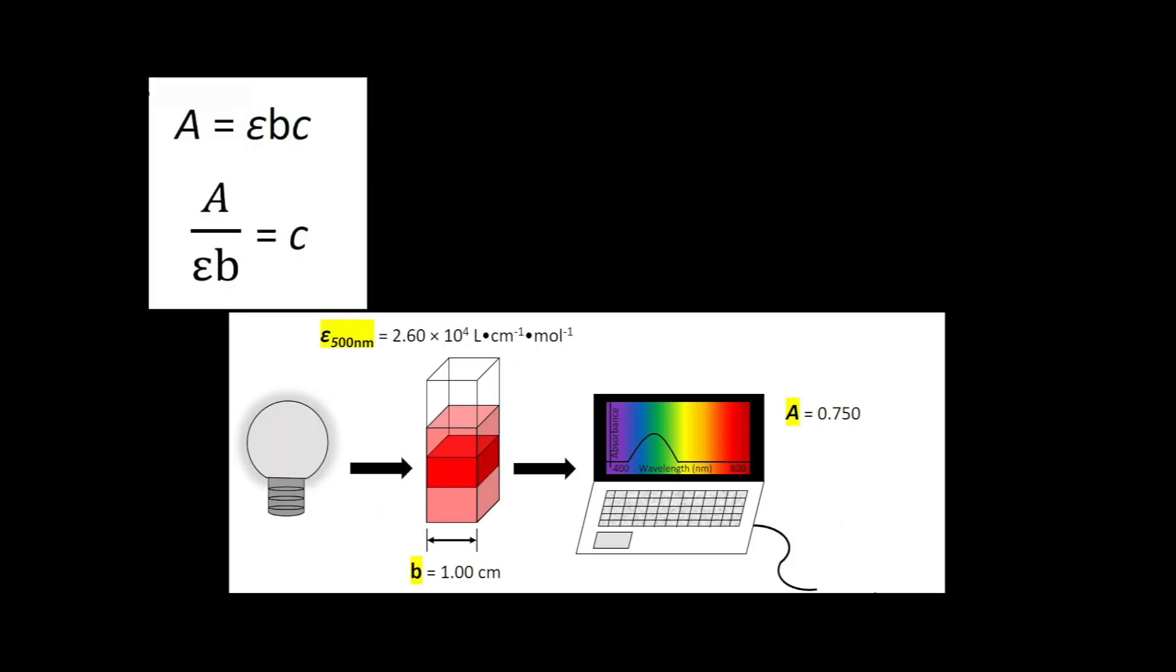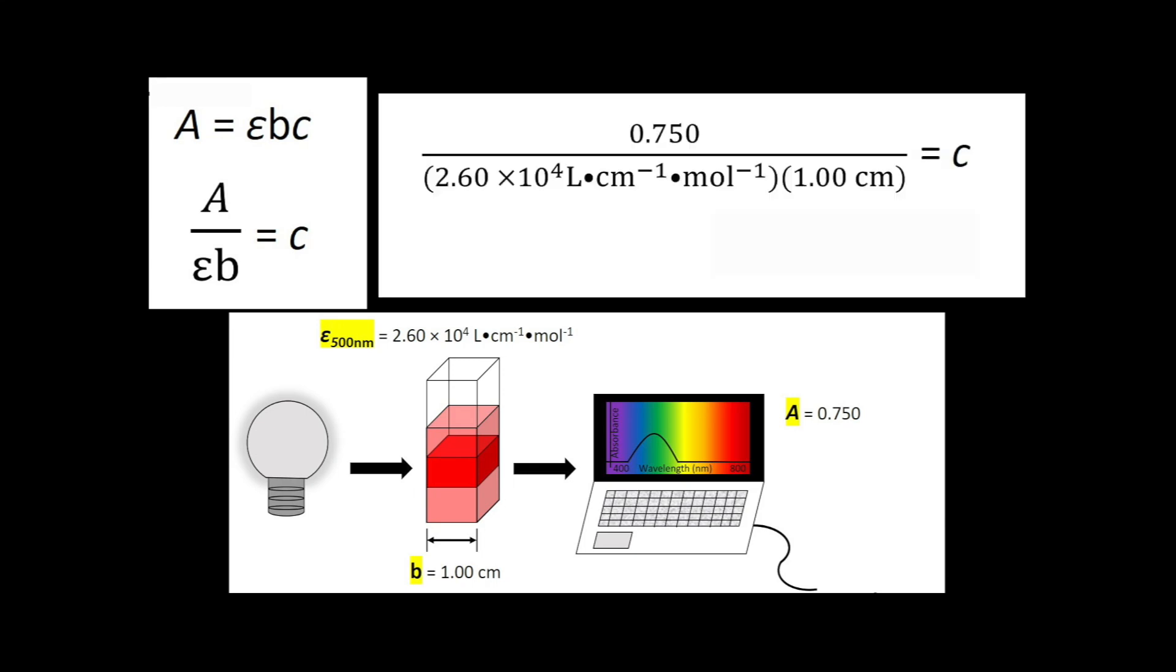You can rearrange Beer's Law to solve for concentration. Substituting the known values into the equation, the concentration of the solution can be determined. Here we come up with the concentration being 2.88 times 10 to the minus 5 molar.